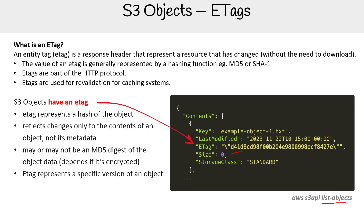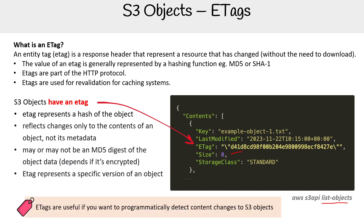ETags are useful if you want to programmatically detect content changes to S3 objects — that is the primary reason I find ETags useful. We might come across a lab where we'll demonstrate that. The key takeaway is that ETags allow you to see changes to content without the need to download them.